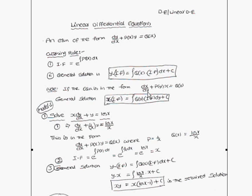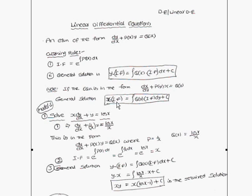If the equation is in the form of dx/dy plus a function in y into x equals a function in y — where these two are functions in y — then the general solution is x times the integrating factor equals the integral of Q(y) times the integrating factor dy, plus c.